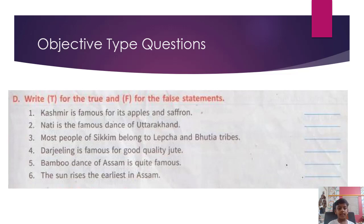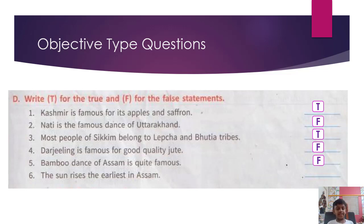The sun rises the earliest in Arunachal Pradesh. D. Write T for True and F for False statements. Kashmir is famous for its apples and saffron — True. Nati is a famous dance of Uttarakhand — False. Most people of Sikkim belong to Lepcha and Bhutia tribes — True. Darjeeling is famous for good quality jute — False. Bamboo dance of Assam is quite famous — False. The sun rises the earliest in Assam — False.